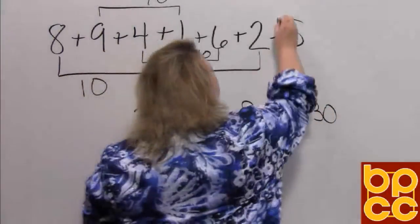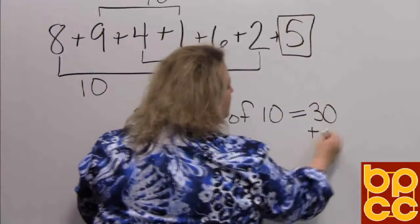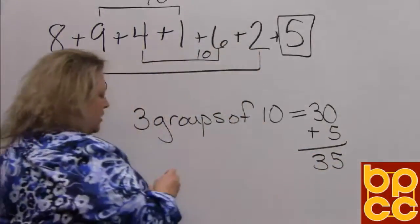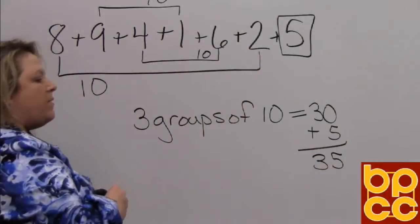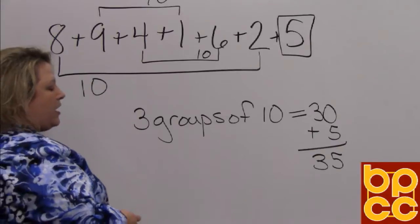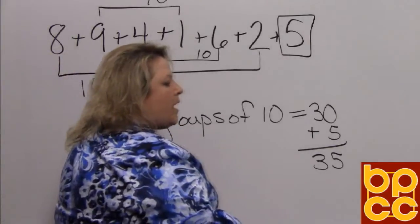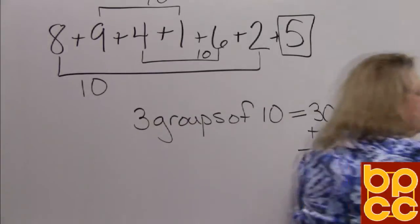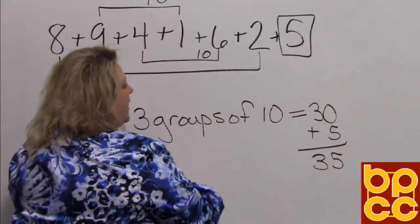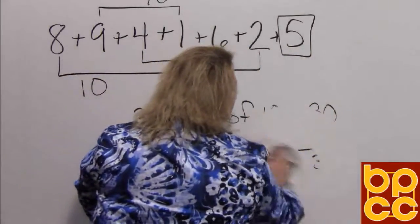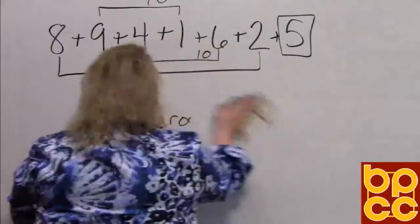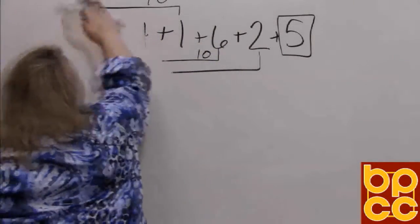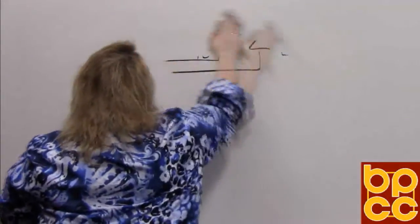Now all we have to do is add the five at the end, which gives us a total of thirty-five. Doing this makes it easier to add in your head. Our next one is going to add, but it's going to give us higher groups of ten, and that's okay. As long as we're making groups of ten, it doesn't matter how big the front number gets.